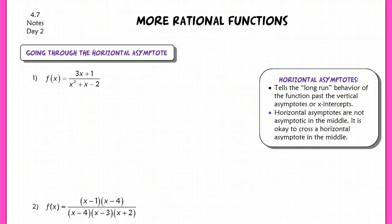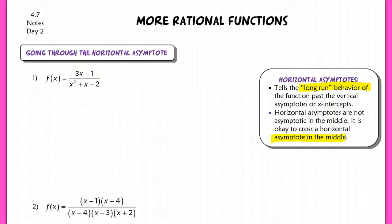This lesson is for section 4.7. We're going to be graphing more rational functions — this is the second day, so we're going to go through it a little bit quicker. All of these problems are going to go through the horizontal asymptote. The horizontal asymptote tells you the long-run behavior of the function when you get past the vertical asymptotes and the x-intercepts. Basically, horizontal asymptotes can be crossed when in the middle of the graph.